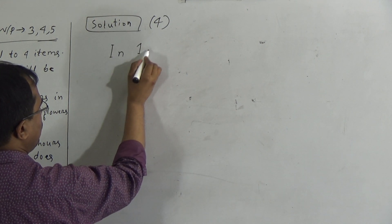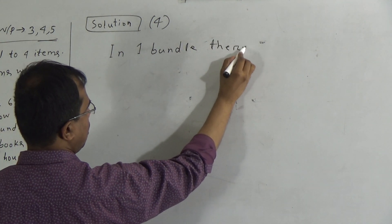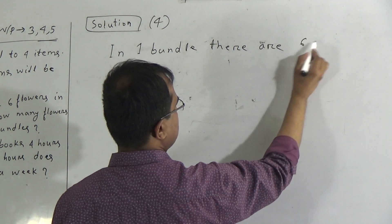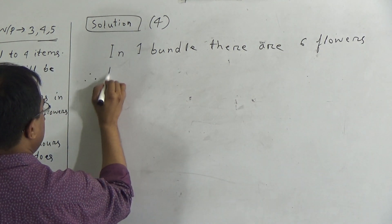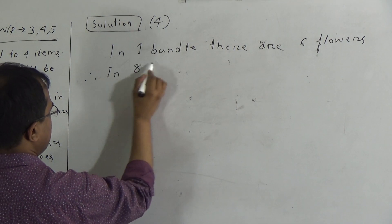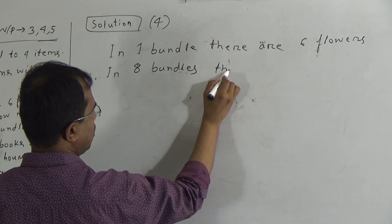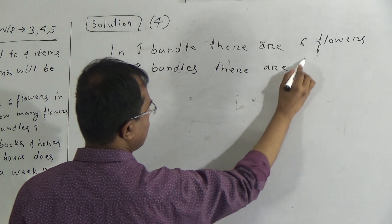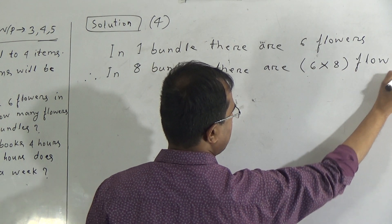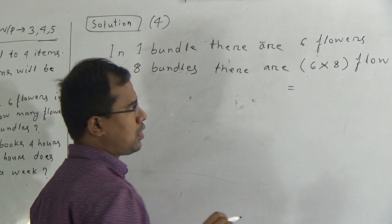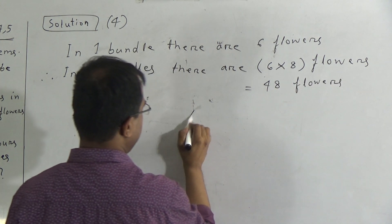In one bundle, there are 6 flowers. Therefore, in 8 bundles, there are 6 multiplied by 8 flowers. If we multiply 6 by 8, then eight 6s are 48. That is 48 flowers. And the answer will be 48 flowers.